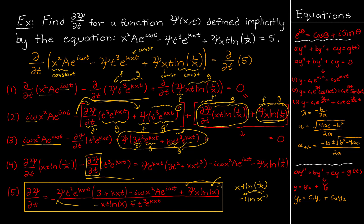Hopefully you guys found this video informative. Don't worry if you didn't completely understand the example — just know that when taking a partial derivative with respect to some variable, all other variables in that multivariable function are kept constant, because we're only looking at how one variable is changing with respect to another while all others remain constant. That's the key idea to take away. Thanks for watching, and I'll see you in the next video.